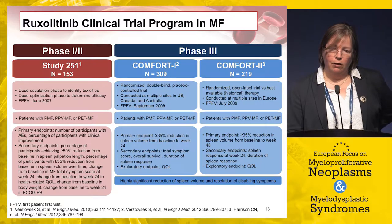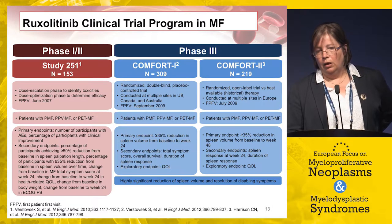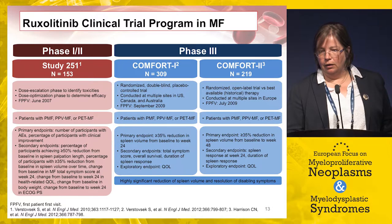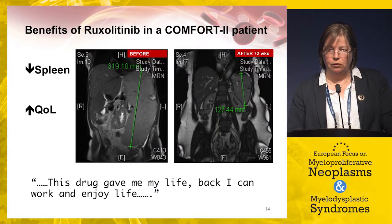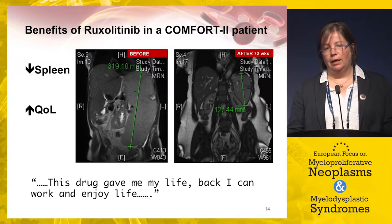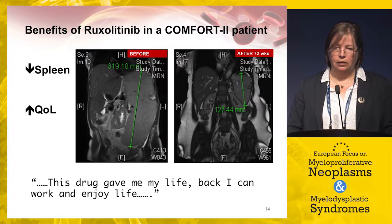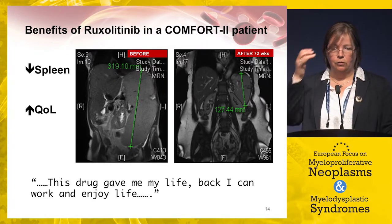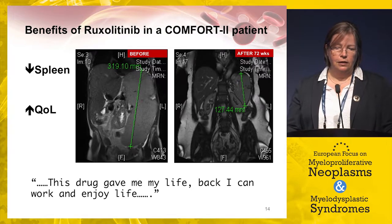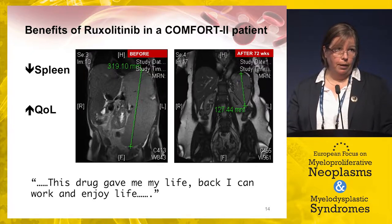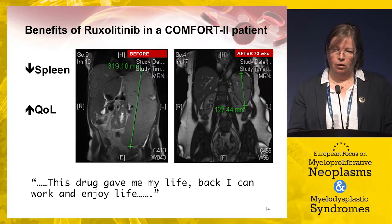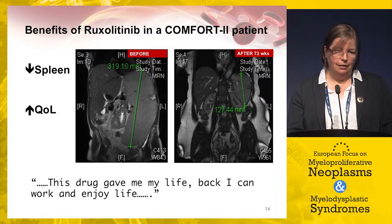We touched on ruxolitinib and data from Study 251 and the COMFORT trials. When thinking about using a JAK inhibitor, I'm mindful of the major benefits shown in a patient treated in the COMFORT-2 study — significant spleen size reduction after 72 weeks, significant quality-of-life improvement, weight gain (an important marker of potential survival benefit), and she continues to do well. I don't wait until the spleen is massively enlarged before initiating ruxolitinib.